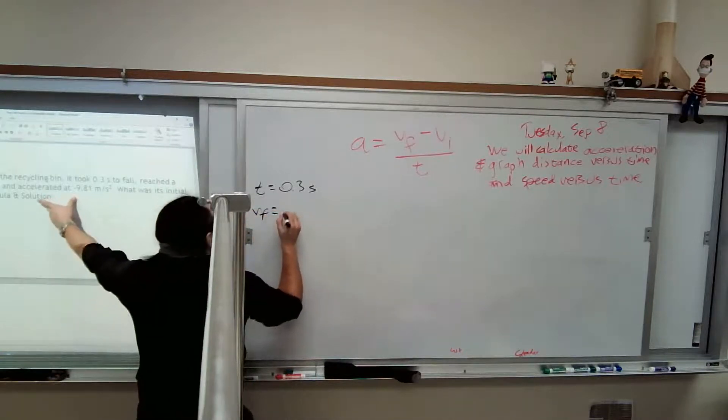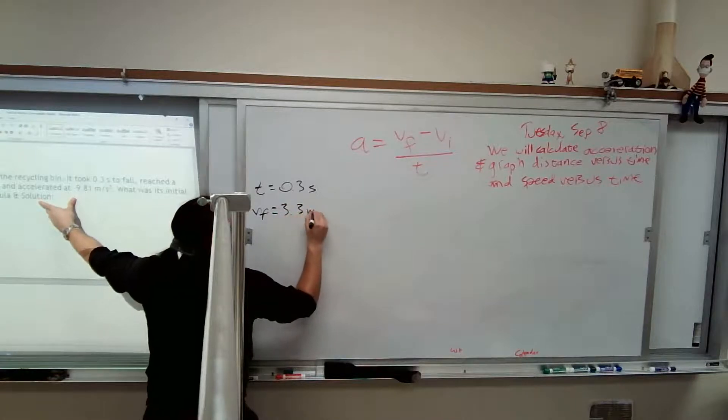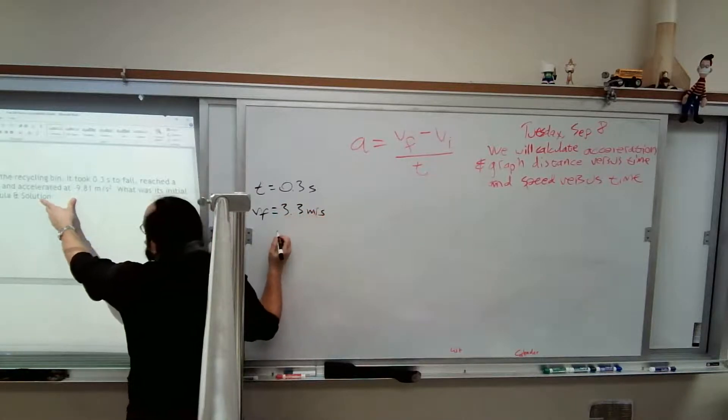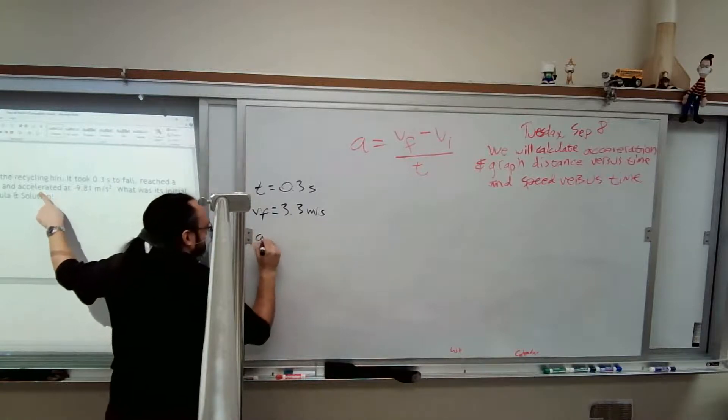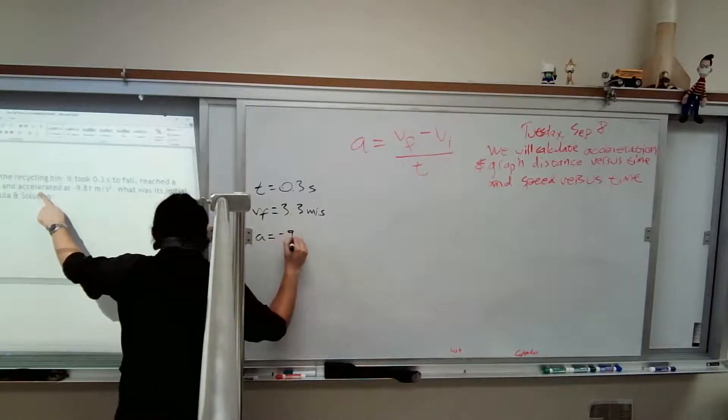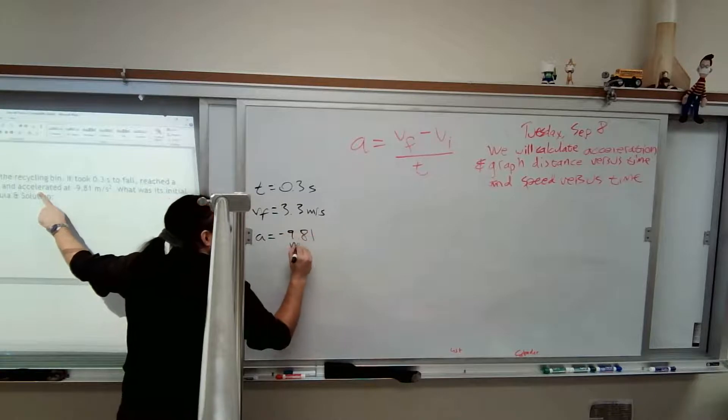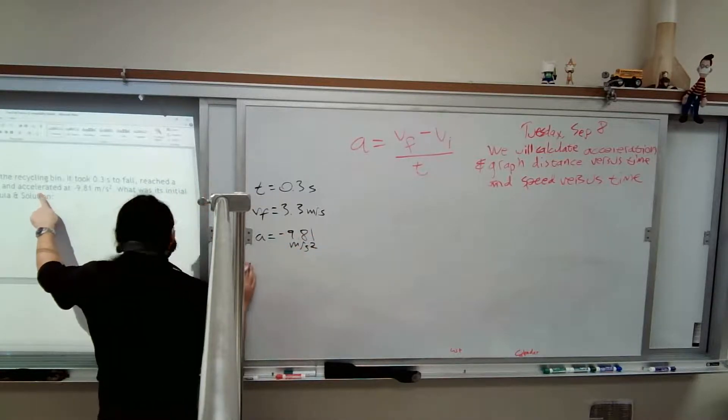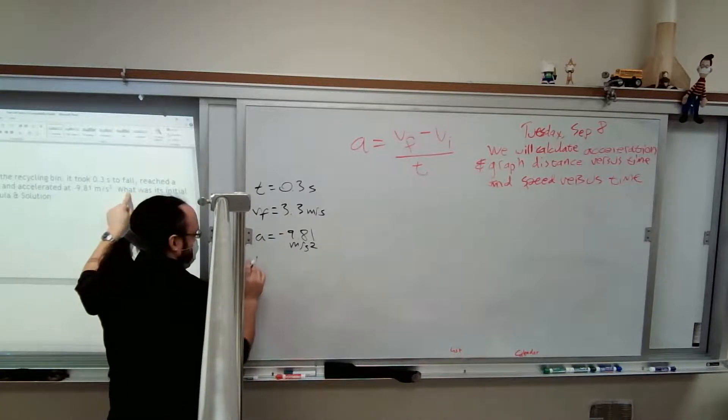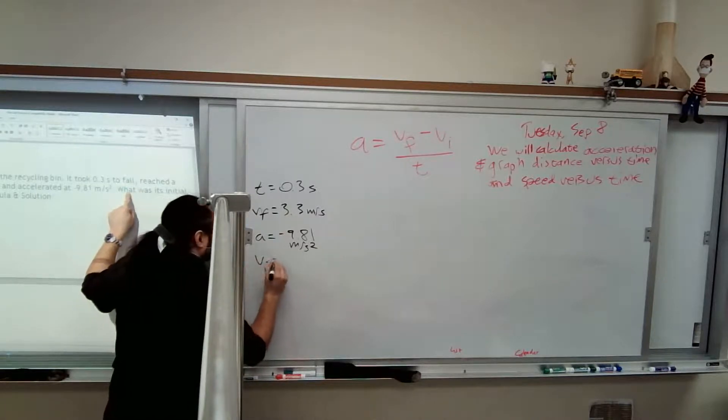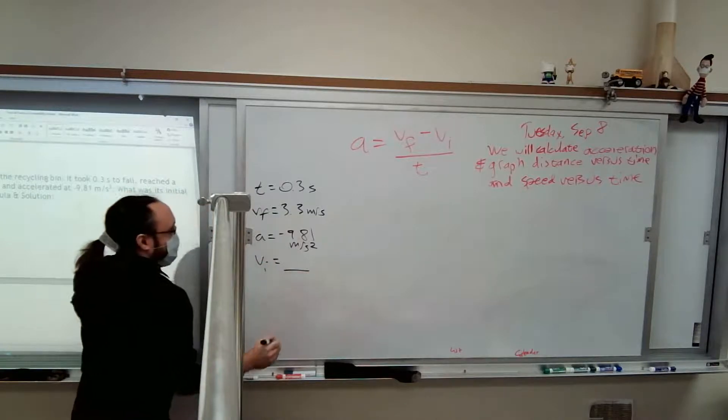Maximum velocity 3.3. That means our final velocity is 3.3. It accelerated at negative 9.81 meters per second squared. We're going to move it there in a minute with the negative 9.81, but we're not there yet. What was its initial velocity? It's asking me for Vi.